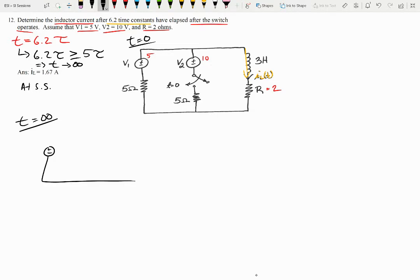Plus minus V2, V1, 5, 10. This is 5, 5, 2. And this is where this inductor was. And we had that switch closed right here.